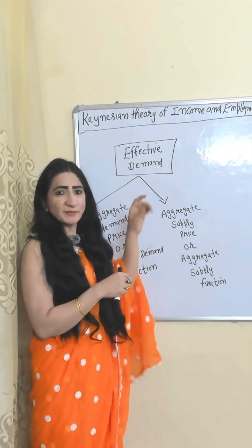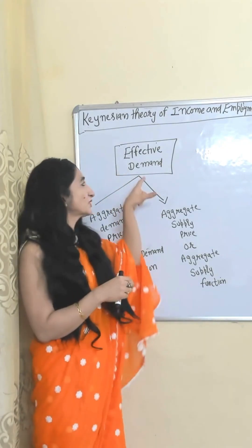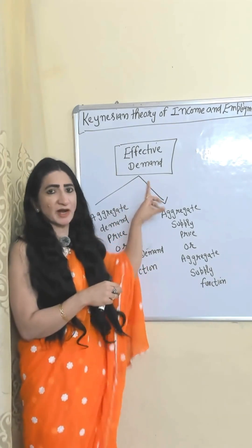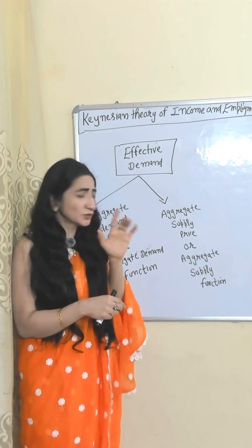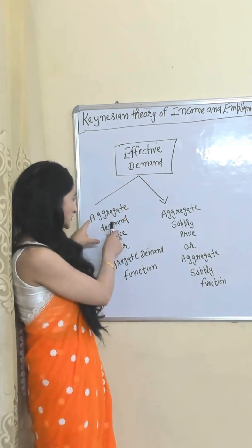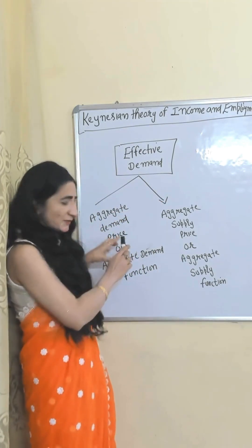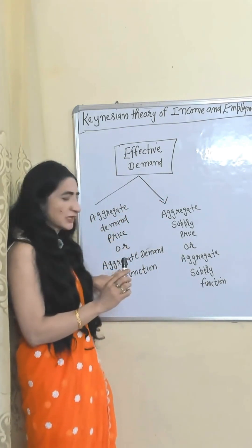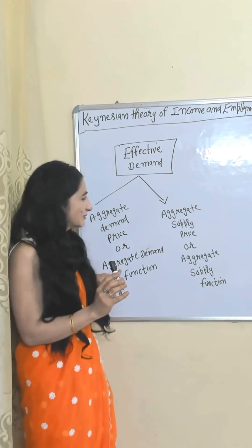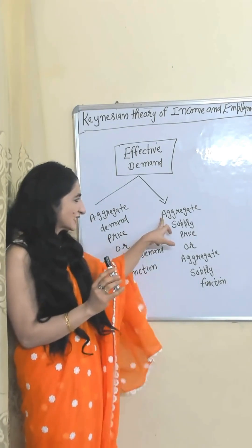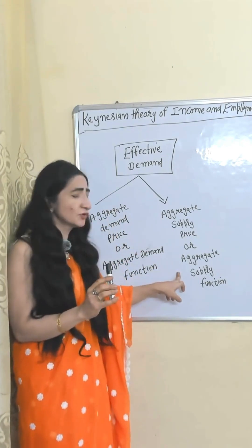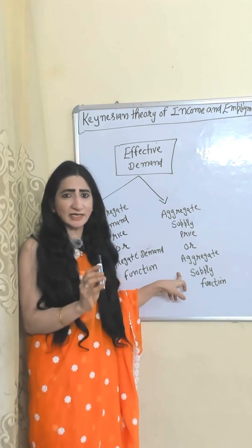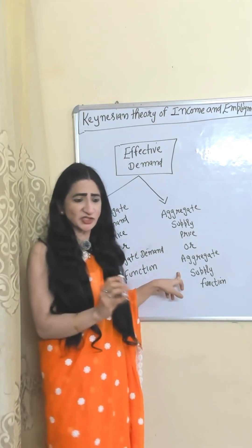Keynesian theory of income and employment is based on effective demand. Effective demand is divided into two parts: first, aggregate demand price, also called the aggregate demand function; and second, aggregate supply price, also called the aggregate supply function.